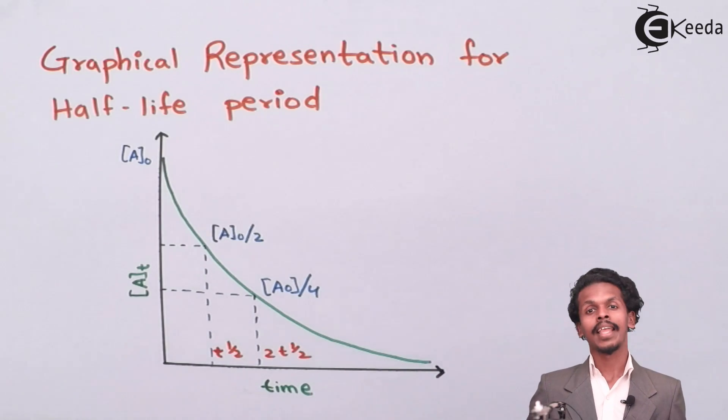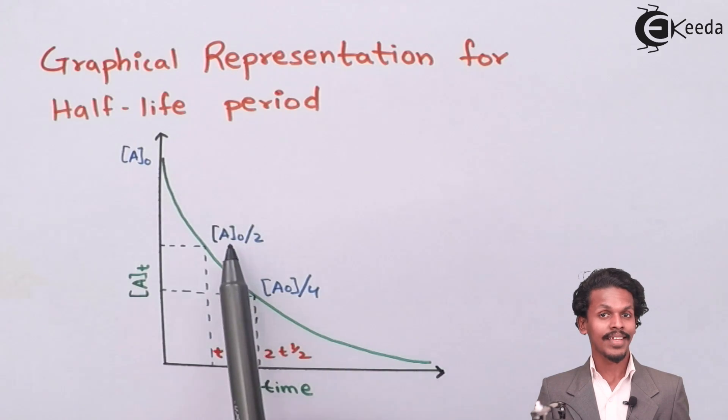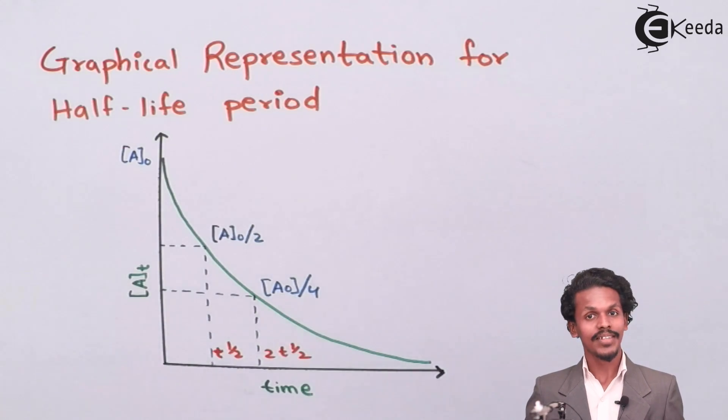This is t half, the time corresponding to that is t half. And now we are moving towards the next half-life. So for that, the initial concentration would be A0 divided by 2 and now its half will be A0 divided by 4.